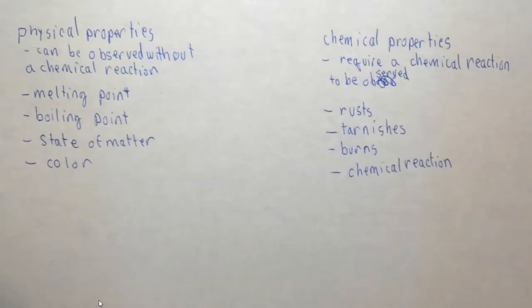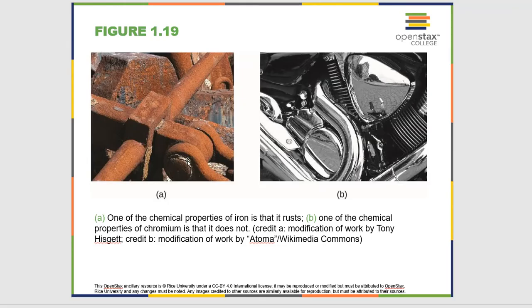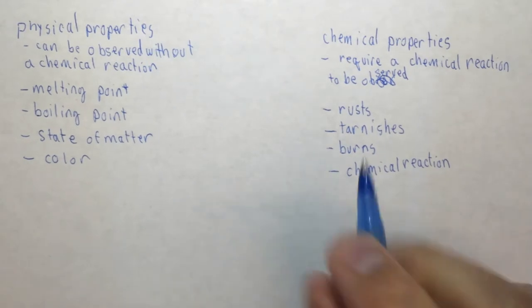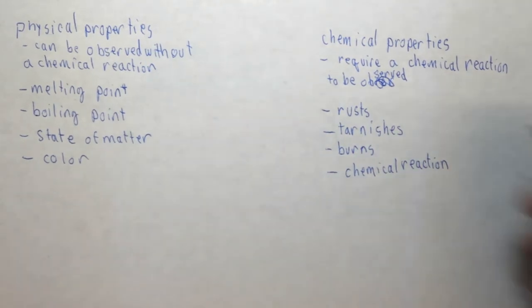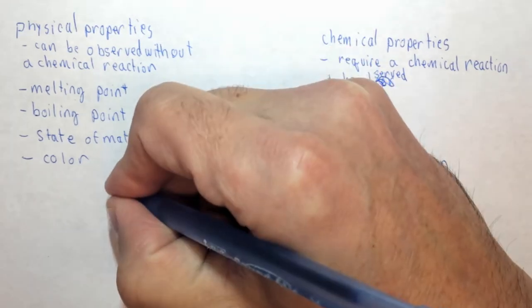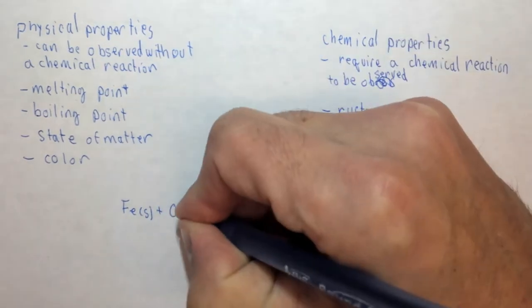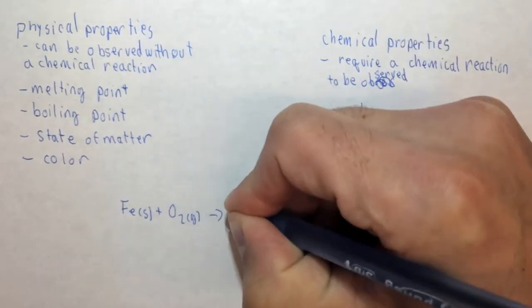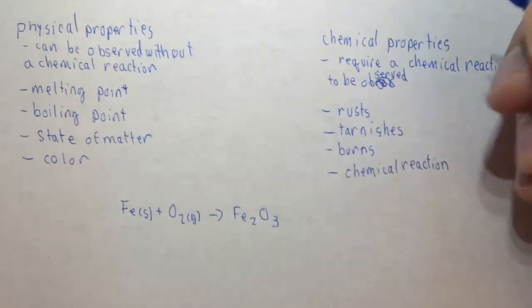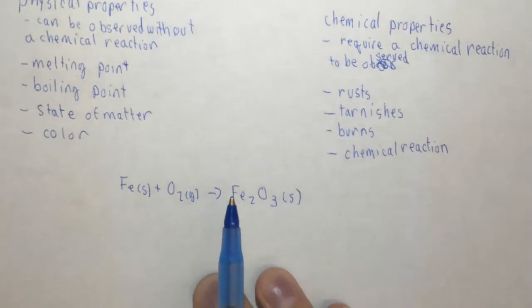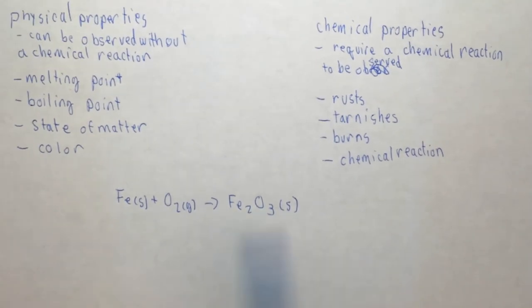So on a macro scale, here we have this iron becoming this rust. And that is definitely a chemical change. But let's look at it from a chemical perspective. If we have iron Fe solid plus oxygen from the air as gas yields Fe2O3 as a solid. And this is not a balanced chemical equation. It's just a chemical equation to demonstrate what's happening.